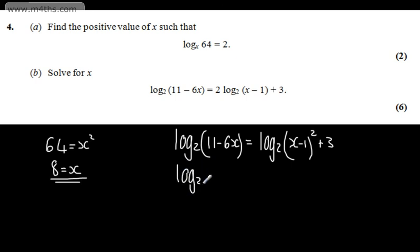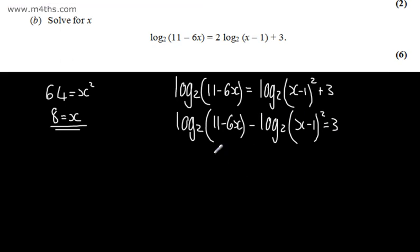So we'll have log to the base 2 of 11 minus 6x minus log to the base 2 of x minus 1 all squared is equal to 3. We have a difference, so we can write this as a quotient.